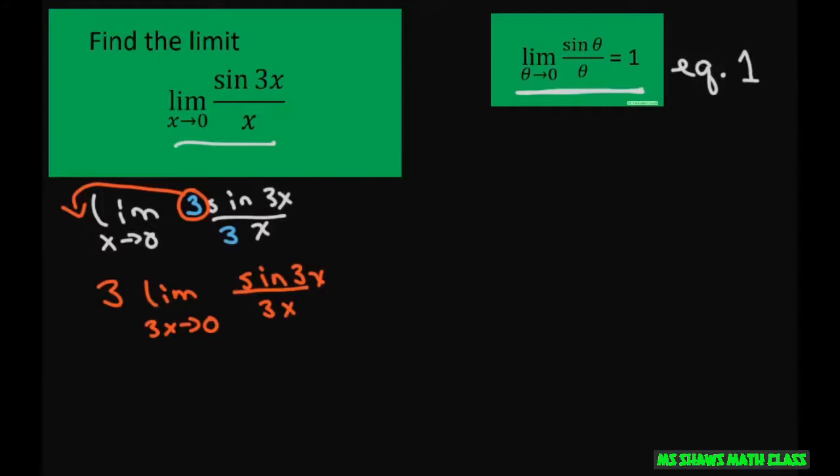And the reason I'm doing that is because I want to let theta equal 3x. So if I let theta equal 3x, I now have 3 times the limit of theta approaching 0 of sine of theta divided by theta.